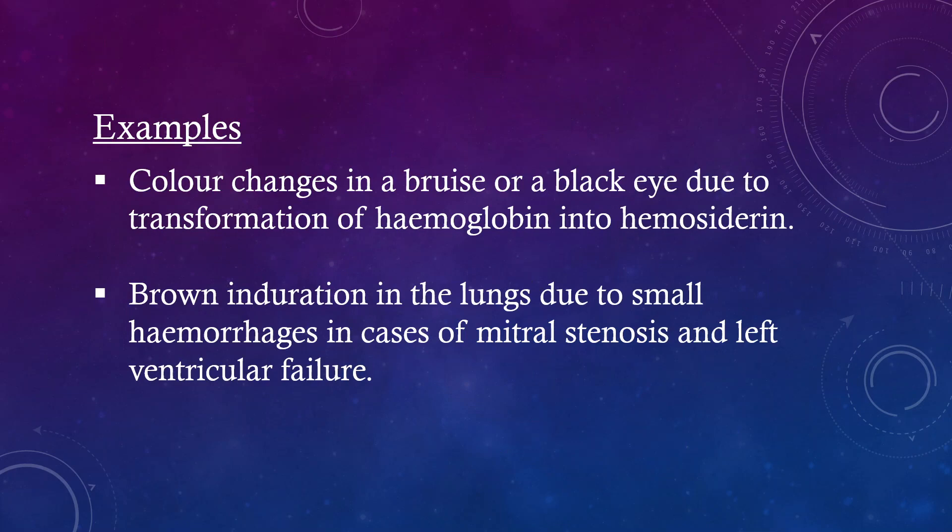Examples: color changes in a bruise or a black eye due to transformation of hemoglobin into hemosiderin; and brown induration in the lungs due to small hemorrhages in cases of mitral stenosis and left ventricular failure.